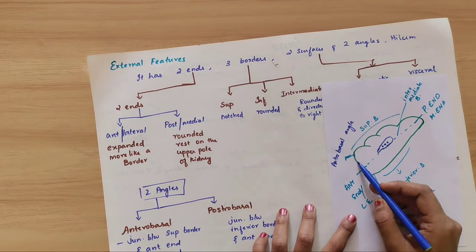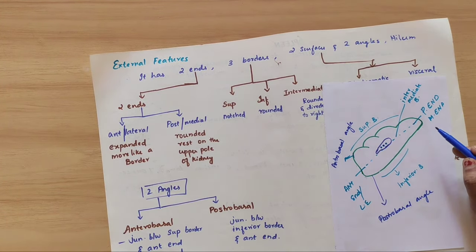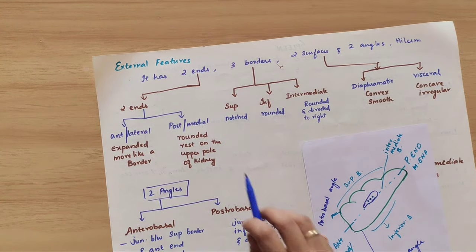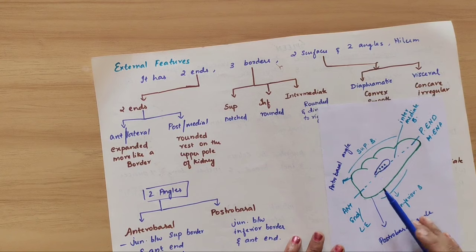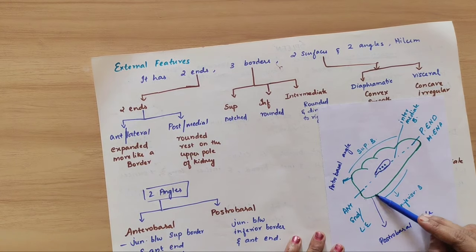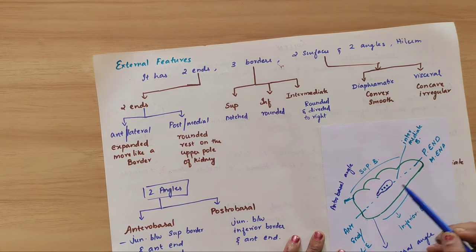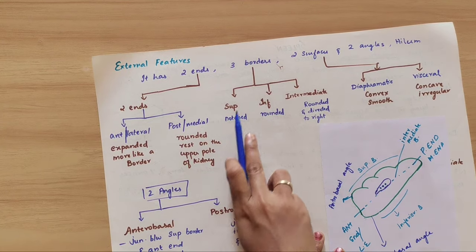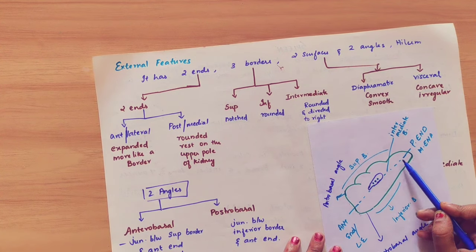The anterior end is expanded and blunt. The posterior end is rounded and situated in the upper part. Regarding the borders: the superior border is notched, the inferior border is rounded, and the intermediate border is also rounded and directed towards the right side.